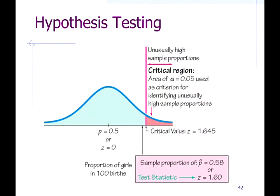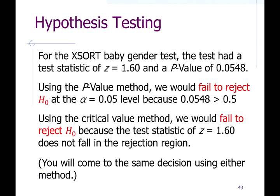Our critical value of 1.645 is above the value of the test statistic of 1.6. So our sample data falls just short of the critical region, meaning our sample results were not strong enough to reject the null hypothesis. If we had more data, perhaps it would be. That is the second-to-last step — determining whether or not to reject the null hypothesis. Now it's just interpretation.